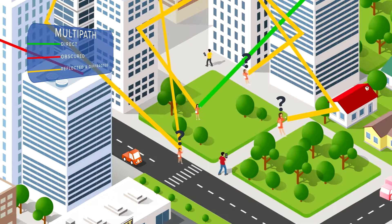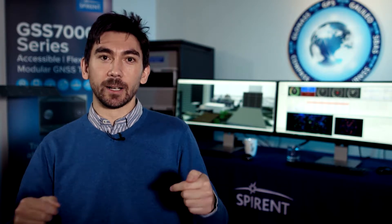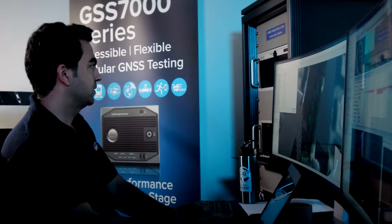Another important aspect of MultiPath is obscuration. Obscuration happens when the signal from the satellite gets blocked by, for example, a building — and this doesn't stop that signal from still arriving at the receiver via reflected objects.